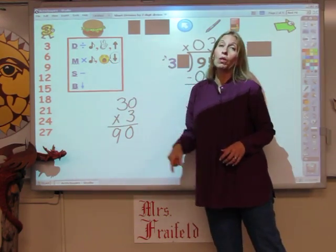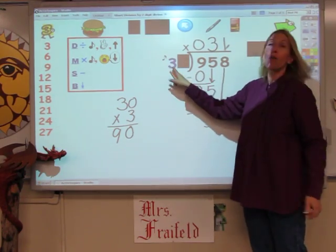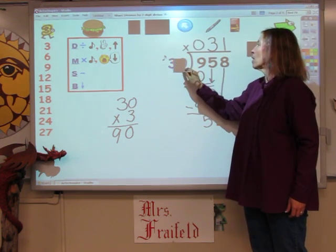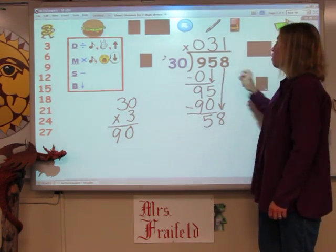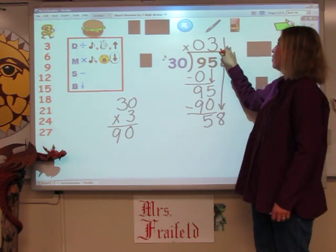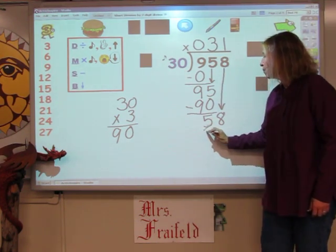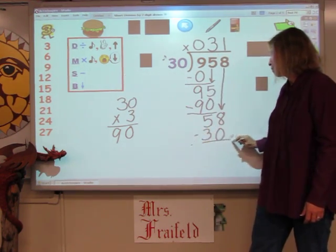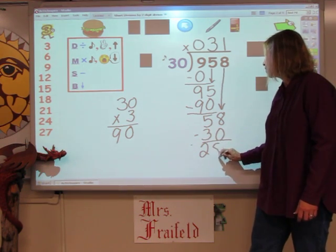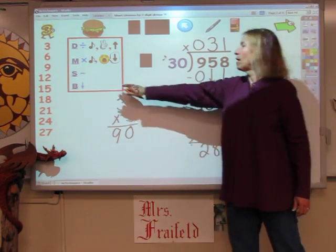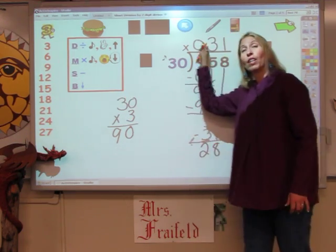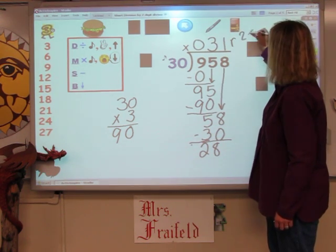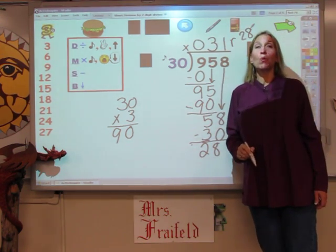My next step is to multiply, but before I multiply I have to remember there's not one digit here — there are 2. So I've got to take the cover away and make sure that I multiply both digits by this 1. 1 times 30 is 30. That's the number I subtract. I have 28 left over. My next step is to bring down — is there anything else to bring down? Then that is my remainder. It's 31 with a remainder of 28.